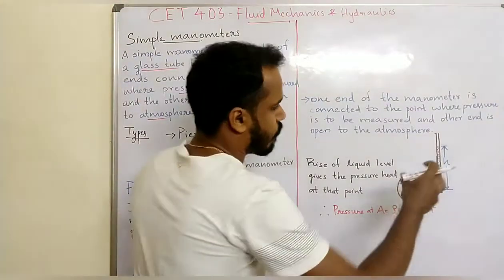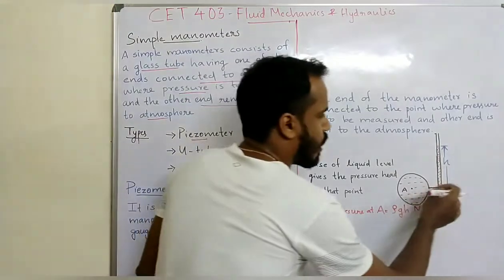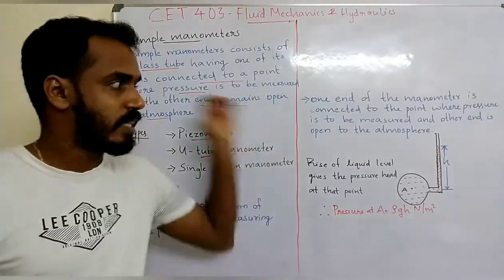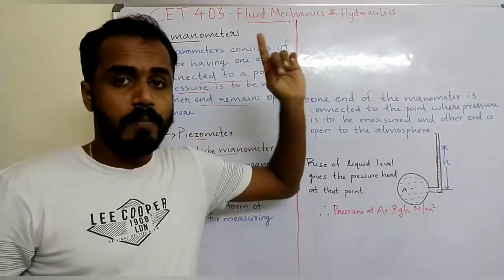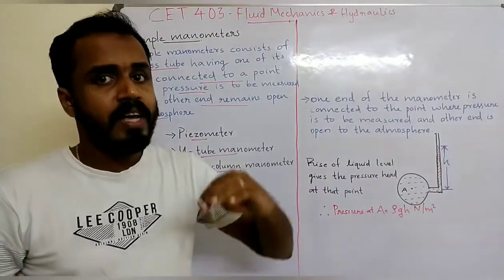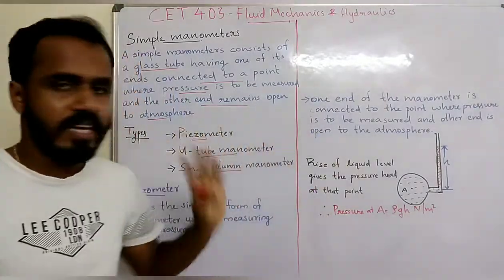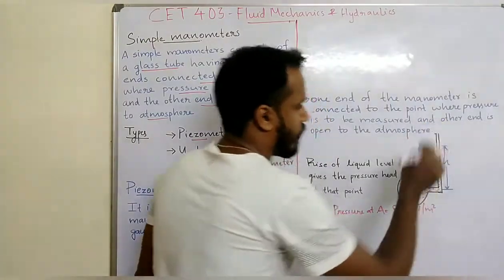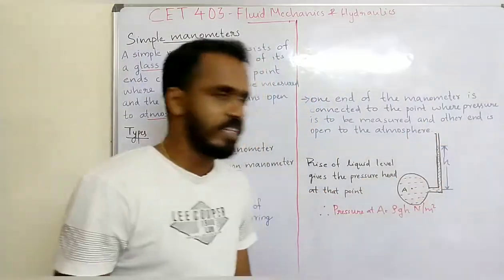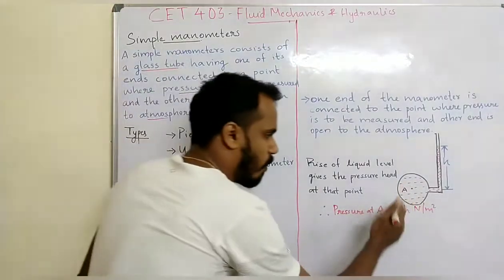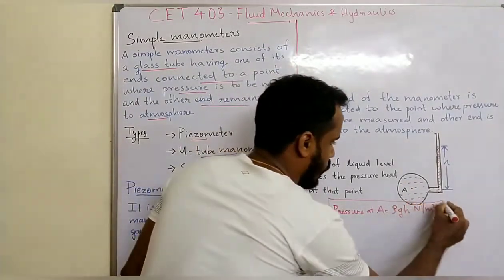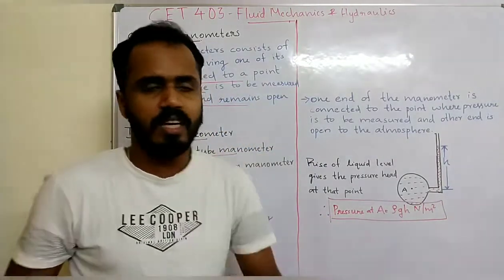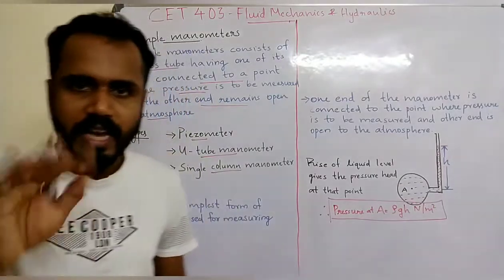If you have water flow, you can measure the pressure in the flow. The water rises in the glass tube to a height H. The pressure is calculated as P equals rho times g times h, in Newtons per meter squared.